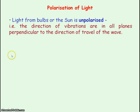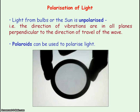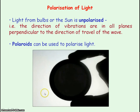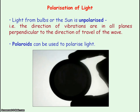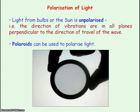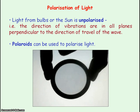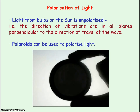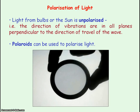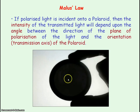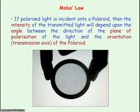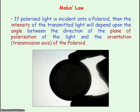Light from bulbs and the sun is unpolarised, and we can use polaroids to polarise it. You get maximum light intensity passing through when the polaroid's transmission axis is in the same direction as the plane of polarisation, but when the polaroid is rotated 90 degrees no light passes through — because the transmission axis is perpendicular to the plane of polarisation. The intensity of light transmitted through the polaroid depends upon the angle between the plane of polarisation and the transmission axis.